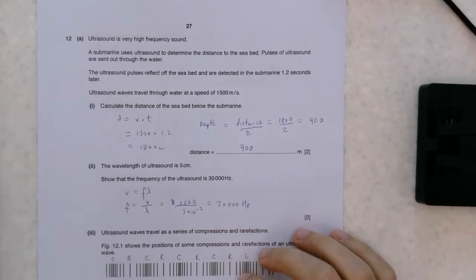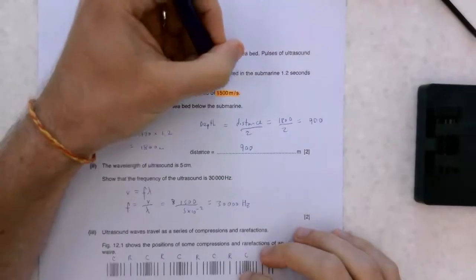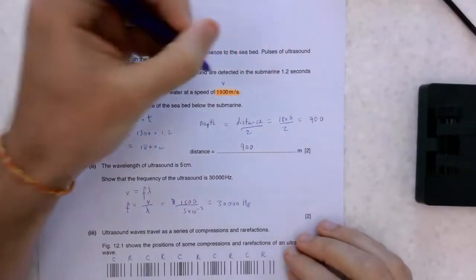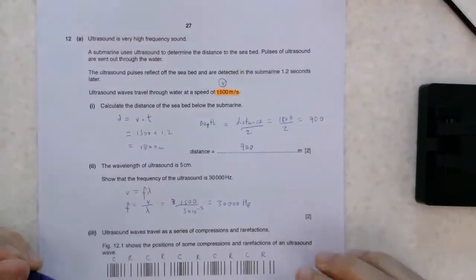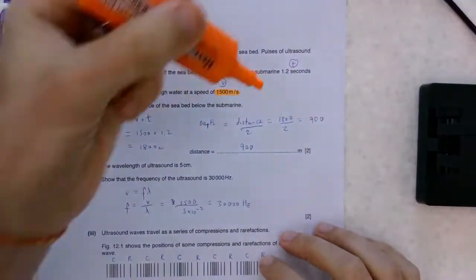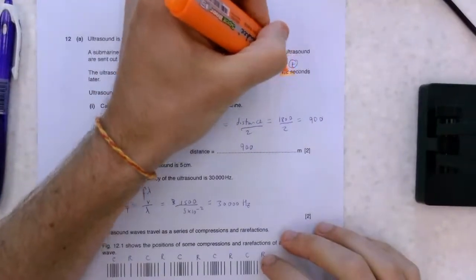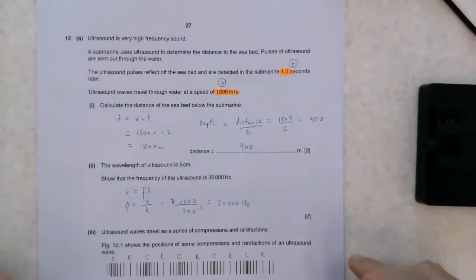We're told the speed. Notice that this is a higher speed than in air. It's because our liquid particles are closer together than in air. And we're also told a time, 1.2 seconds. Not really sure why they've decided to go for the full word rather than just the unit. We've got speed and time.